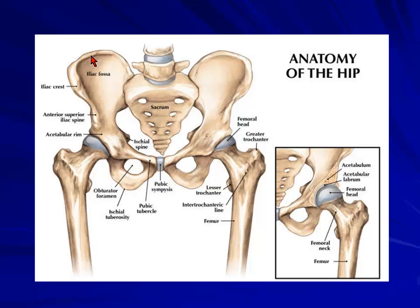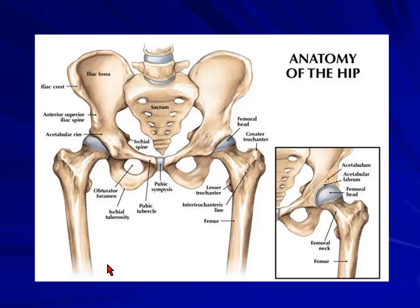Looking at the sacrum, you've got the body of the sacrum, these are the sacral foramina, and this is the sacral ala. This is very important because most of the weight is transmitted from here, goes into this, and goes onto the fibula and down into your feet.